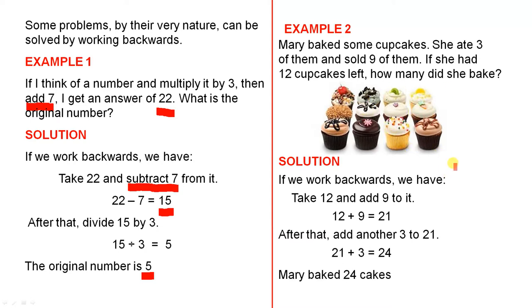Let's look at the solution. If we work backwards we have, take 12 and add 9 to it. Because it says she sold 9. Selling 9 is like subtraction. The opposite of subtraction is addition. So 12 plus 9 is 21.